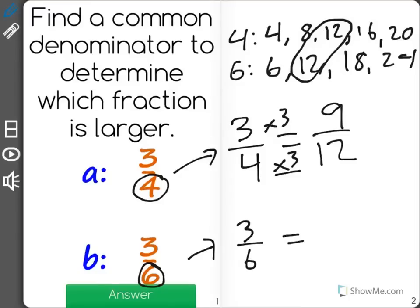3 sixths will also have a denominator of 12, and to go from 6 to 12, I multiply by 2, so I have to do the same to the numerator. 3 times 2 is 6.